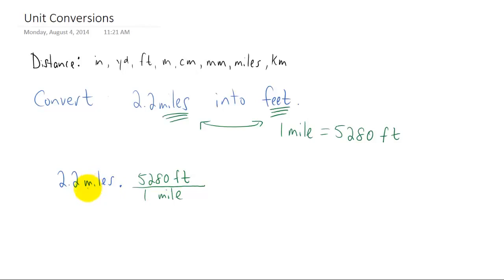So in this example we wanted miles to cancel out and they do because you have miles in the numerator and miles in the denominator. The unit that we're then left with is feet, exactly what we're looking for.